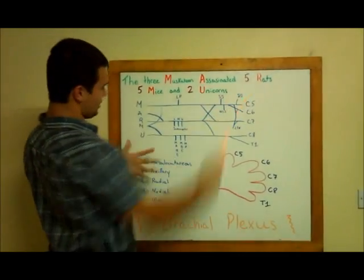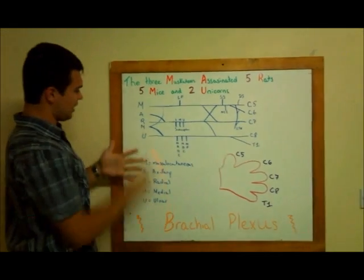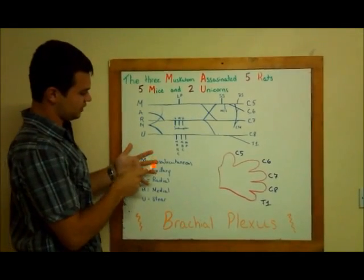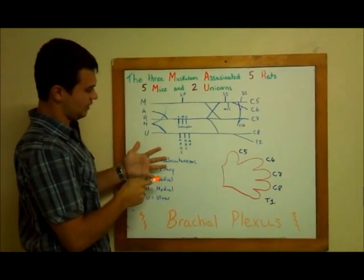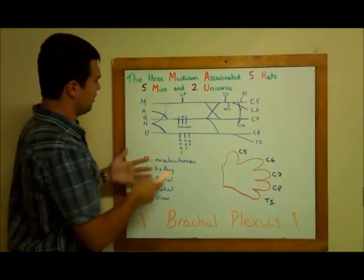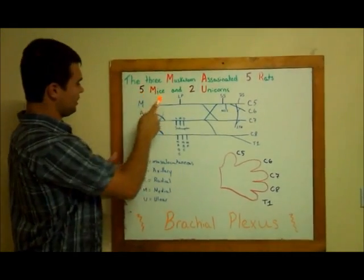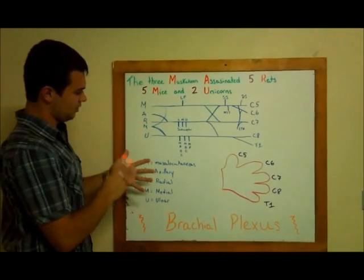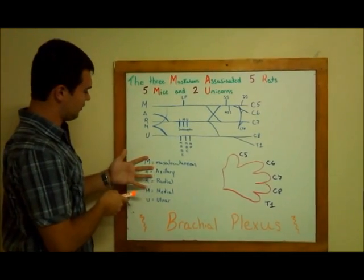Five rats — so five, radial. C5, C6, C7, C8, and T1. Five — median — same thing, from all five.